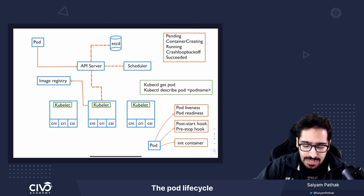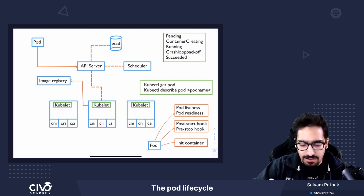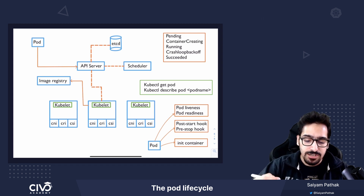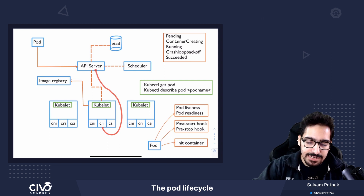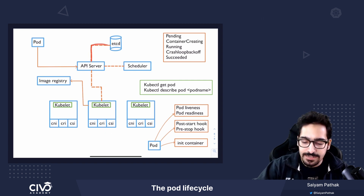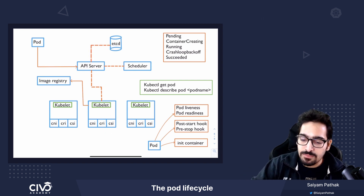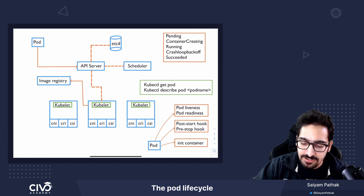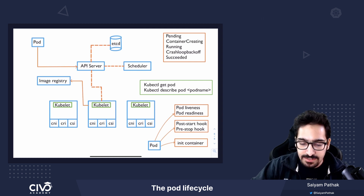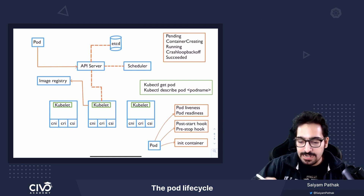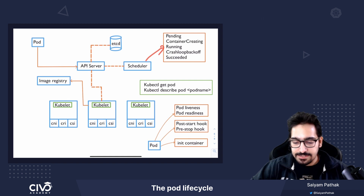The kubelet is responsible for fetching the image from the image registry — it can be any image registry. The CRI does that, and the CNI will get the IP attached to the pod. That particular IP will be sent back to the API server and again stored in etcd. From there it goes to the container creating state, and after the image is pulled it goes to the running state.